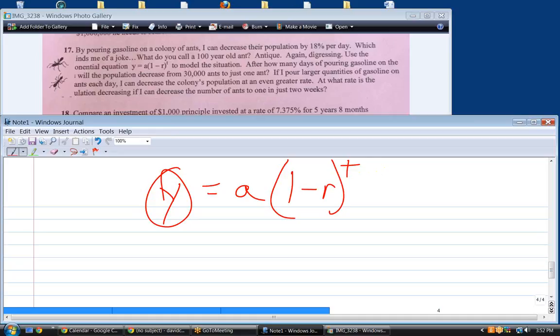So how many days of pouring gasoline will the population decrease from 30,000 ants to just one ant? So what's the equation we're going to write? Would you do y equals, or no? What's y going to end up being? Would it be one? Uh-huh. One equals 30,000 times one minus .18. Okay. Which is .82 raised to the t. There's your equation. That's how long it's going to take.